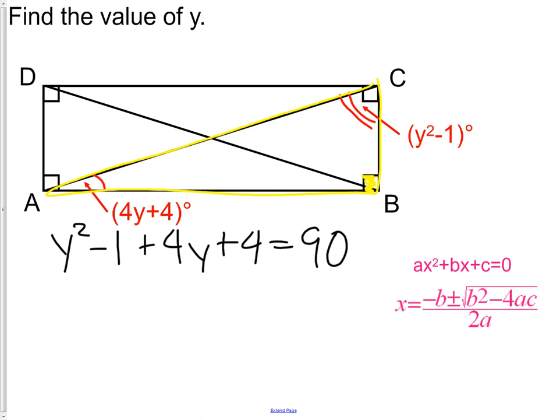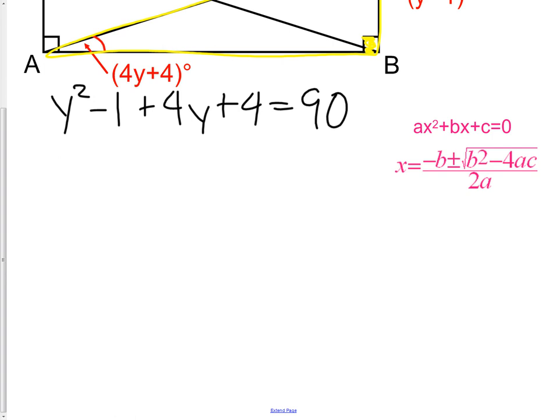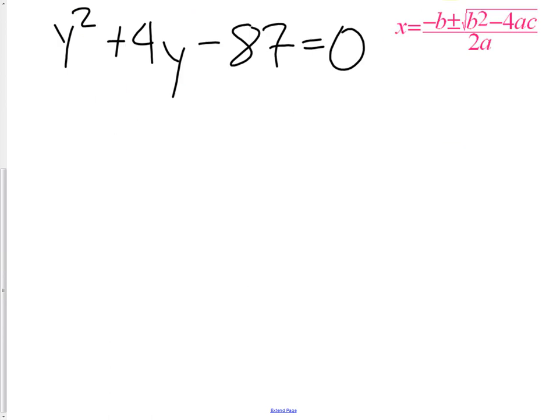Rearranging all of this, getting it back into what we would call standard form, we would get Y squared plus 4Y minus 87 equals 0. Now we're in standard form. AX squared plus BX plus C. That's the form we have to get into in order to use the quadratic formula.